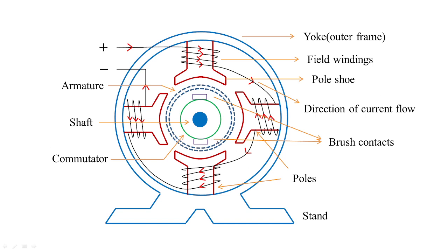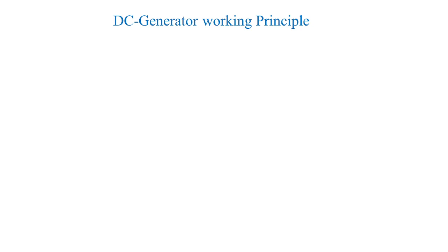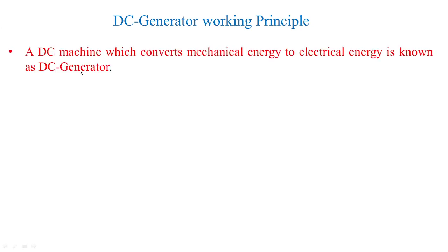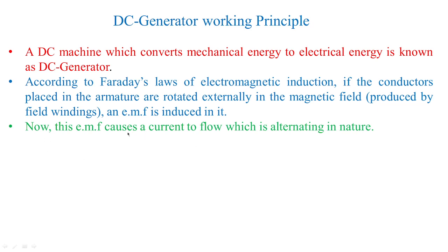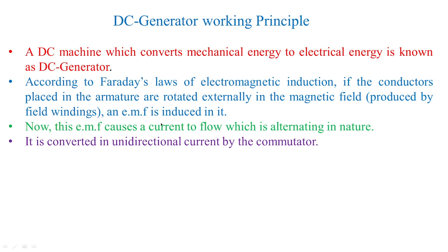This construction detail we have seen in our past classes, and the working principle tells us that a DC machine converts mechanical energy into electrical energy — that machine is regarded as a DC generator. According to Faraday's law of electromagnetic induction, if the conductors placed in the armature are rotated externally in the magnetic field, an EMF is induced in them. This EMF causes a current to flow which is alternating in nature.